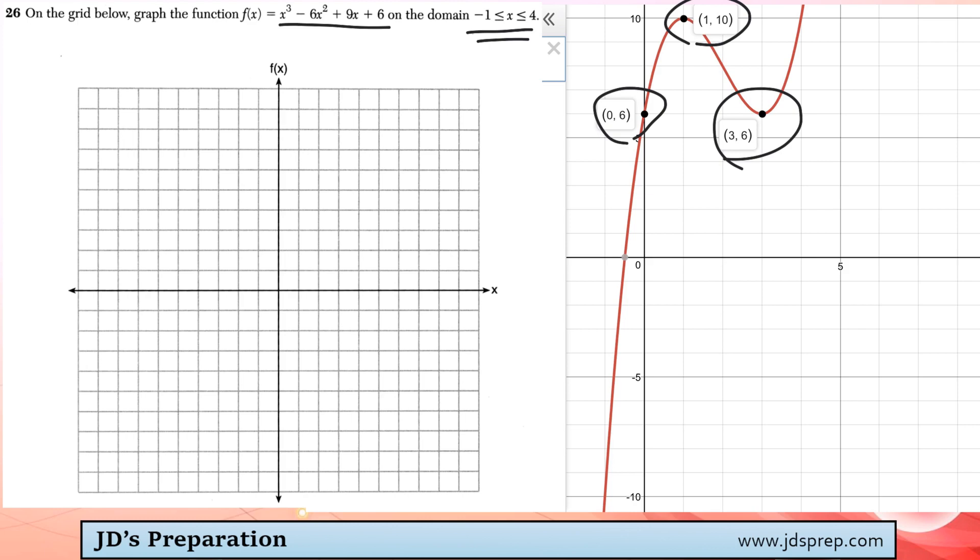So 0, 6 would be here. 1, 10 is up here. And 3, 6 is here. There's also the point negative 1, 10 down below here. So let's go ahead and start sketching these guys.